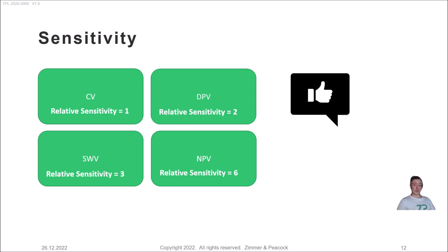I'm going to get into our lab and actually test this out and record it — but I do want to raise the question: yes, you might get greater sensitivity, but does it give you better limit of detection advantages that people are looking for? I think the answer is yes — square wave voltammetry and differential pulse voltammetry do give better limits of detection — and it's claimed in many papers, but I think we need to go into the lab and really prove that out.